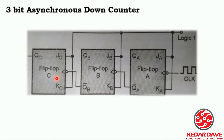The down counter will count in the decreasing manner. First it will be on the highest side. For a 3-bit counter, it will count up to 7, because we are considering from 0 — so 0, 1, 2, 3, 4, 5, 6, 7.